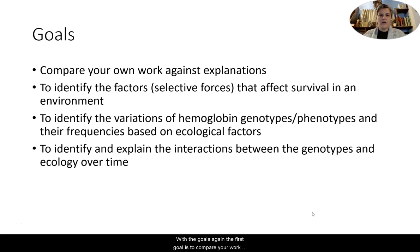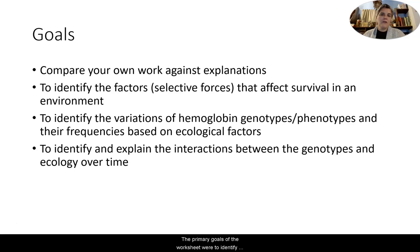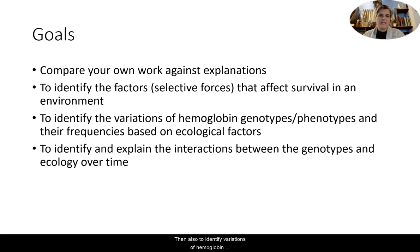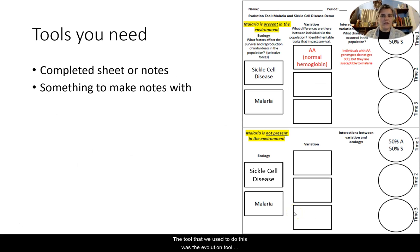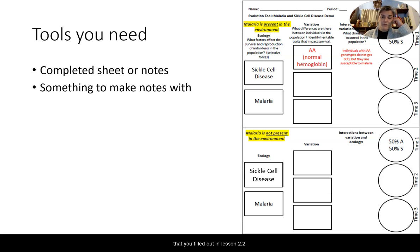The first goal is to compare your work against the explanations. The primary goals of the worksheet were to identify selective forces that affect survival in an environment, then to identify variations of hemoglobin genotypes and phenotypes and their frequencies based on ecological factors. Your last goal was to identify and explain the interactions between the genotypes and ecology over time. The tool used was the evolution tool, pictured here on the right-hand side, that you filled out in lesson 2.2.